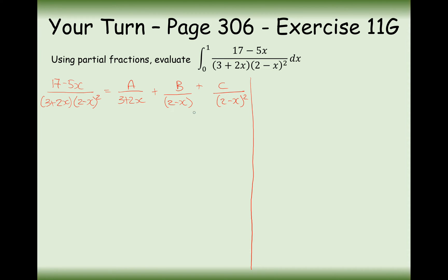So your partial fractions need to look like this. The next thing we'll do is multiply through by the whole denominator. That gives us 17 minus 5x equals A(2 minus x) squared plus B(2 minus x)(3 plus 2x), and then plus C(3 plus 2x).